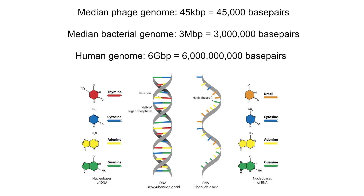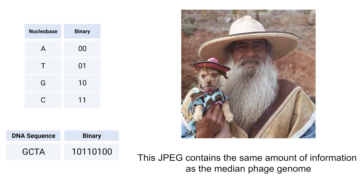Compare that with the median bacterial genome size of three megabase pairs and our own genome of around six gigabase pairs. To put that in perspective, in binary, one byte composed of eight bits can encode four base pairs, since we need two bits to represent each possible A, T, G, or C. Therefore, we could encode the genome of the median phage in 11.2 kilobytes, which is the file size of this JPEG. And yes, a kilobyte is 1,000 bytes, not 1,024, because technically that's a kibibyte.